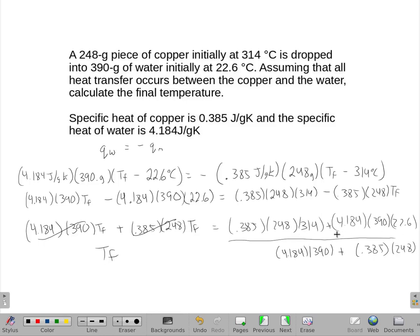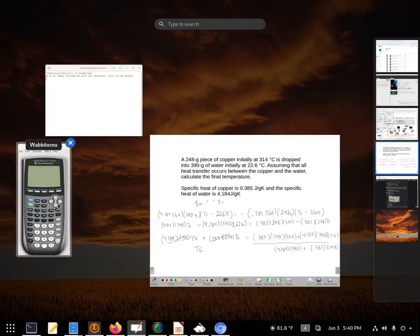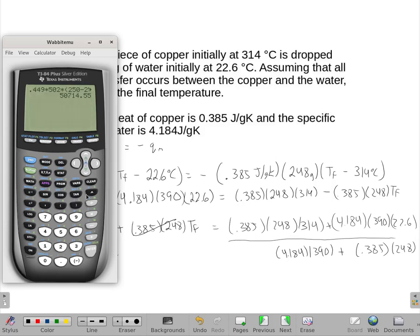So I'm doing this math over here. So get up the calculator here, and I will have 0.385 times 248 times 314 plus, I'll do this in parentheses so we make sure it doesn't do anything weird, 4.184 times 390 times 22.6. Close those parentheses, so that's everything on the top.